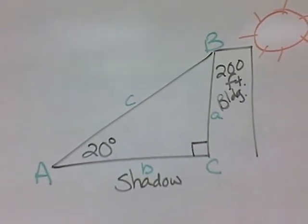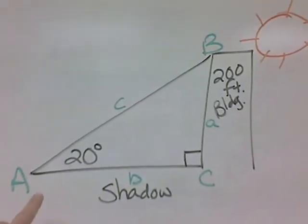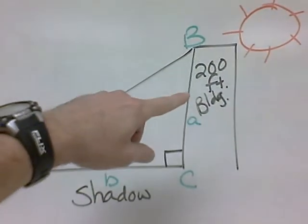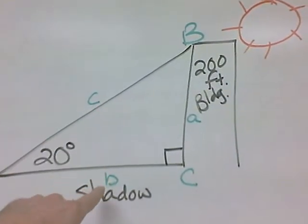So we started looking at the triangle, and we see that we have angle A and side A given, and we need to know side B.